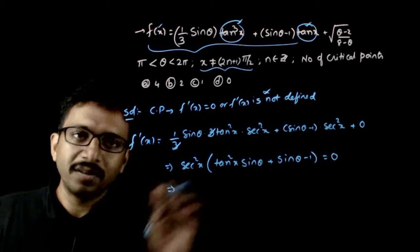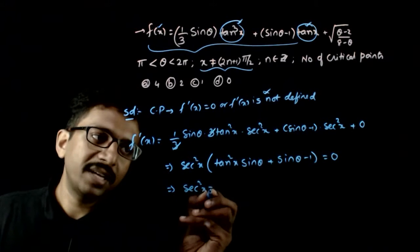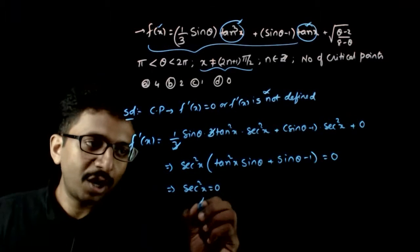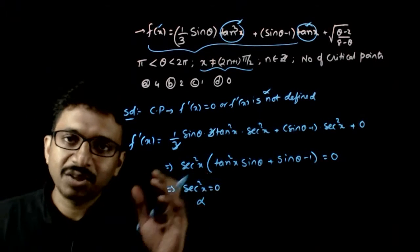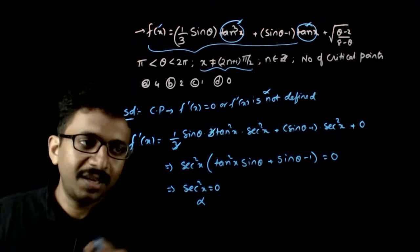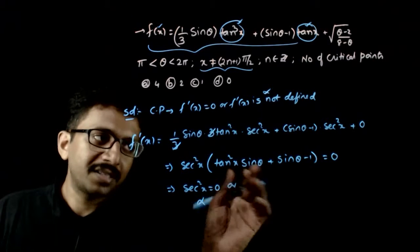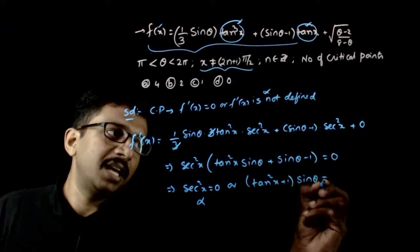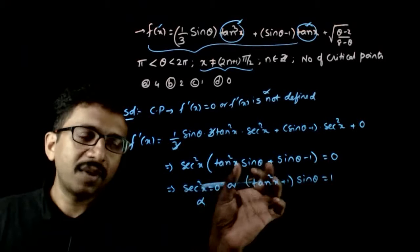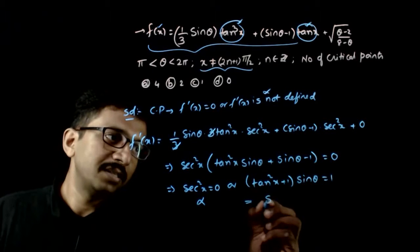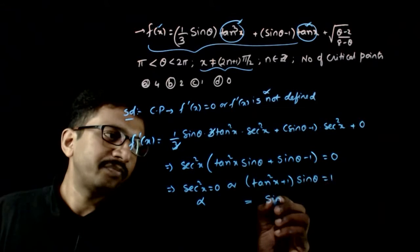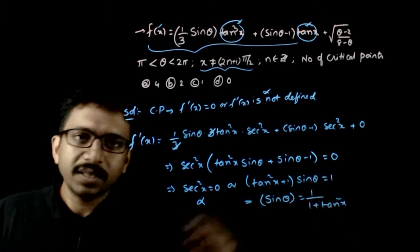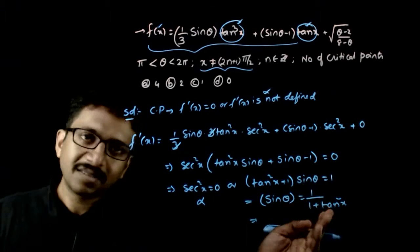So either sec²x = 0 or the second factor equals 0. Sec²x = 0 would require cos x to be infinity, which is not possible — secant is never 0 since it is always greater than 1 or less than −1. So the second option is: (tan²x + 1)·sinθ = 1, which gives sinθ · sec²x = 1, so sec²x = 1/sinθ, which equals cosec θ.